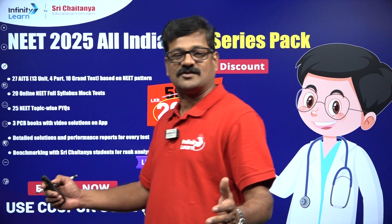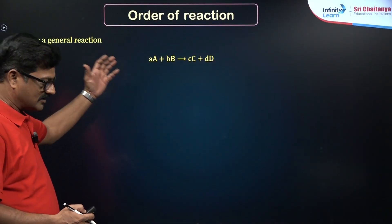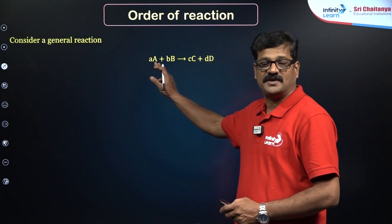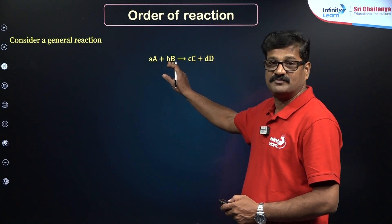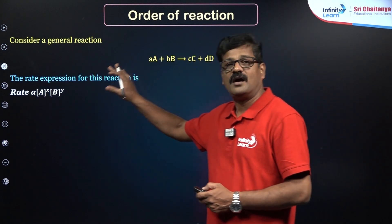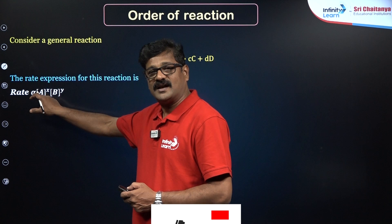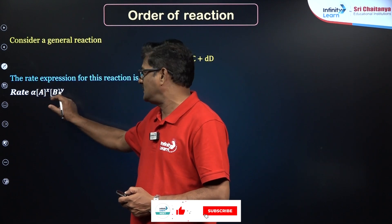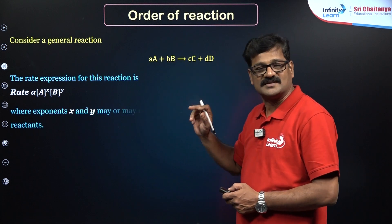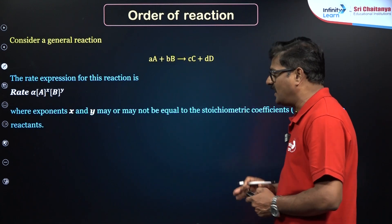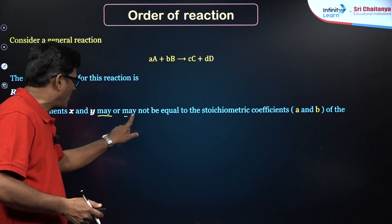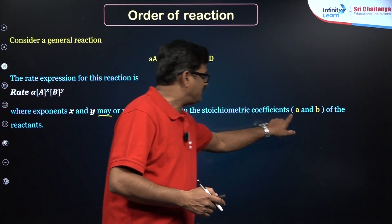Today's class of interest is about chemical kinetics: order and molecularity. Consider a reaction: aA + bB → cC + dD. In this hypothetical reaction, the rate law expression is given as: rate is directly proportional to [A]^X and [B]^Y. Why X and Y here, not a and b? Experimentally it is found that exponents X and Y may or may not be equal to the stoichiometric coefficients a and b given in the balanced equation.